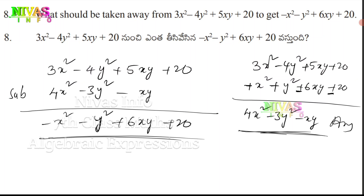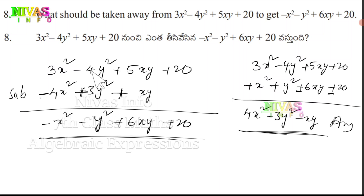So subtraction — this is minus and this is plus and this is plus. Here: 3x² and 4x² — this is big value, giving negative x². Negative negative is fast. This is negative 3 and this is 4 giving negative y². Next, 5xy and 6xy: 20 and 20. So this is the result.